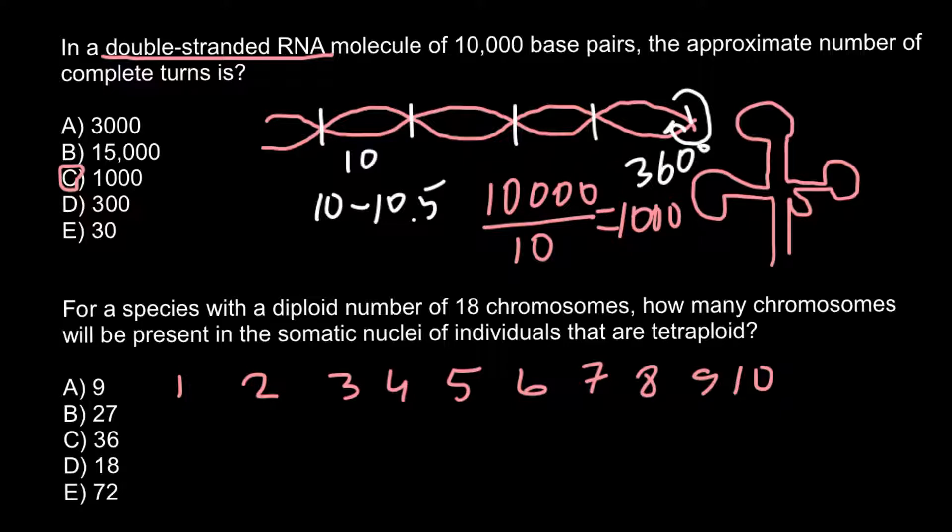We are told that in a diploid organism, the number of chromosomes would be 18. So how many chromosomes would we find in haploid? In haploid we would find nine chromosomes. By the way, haploid and monoploid is not the same; I will explain later. In triploid we would find 18 plus 9, which is 27 chromosomes. And in tetraploid we would find 36 chromosomes, and this is going to be our answer, answer C.